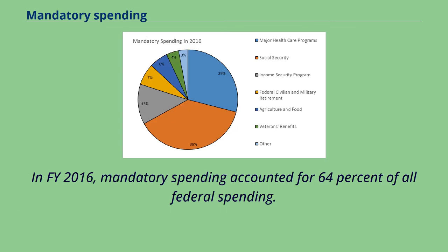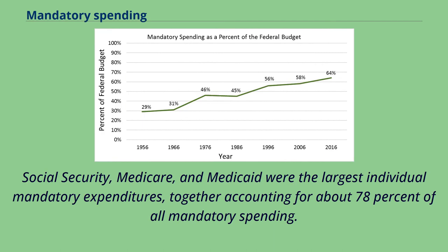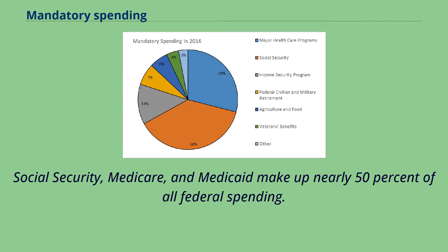In FY 2016, mandatory spending accounted for 64% of all federal spending. Social Security, Medicare, and Medicaid were the largest individual mandatory expenditures, together accounting for about 78% of all mandatory spending. Social Security, Medicare, and Medicaid make up nearly 50% of all federal spending.